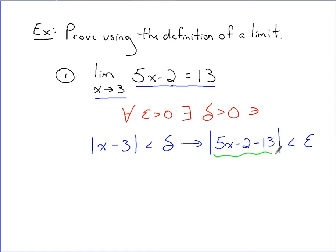You're going to take what you have here in absolute value. You're going to simplify it. So when I simplify it, I've got the absolute value of 5x minus 15, all that less than epsilon.